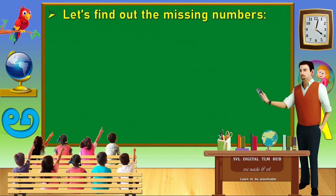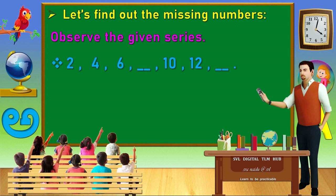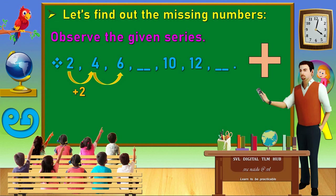Let's find out the missing numbers. Observe the given series. In this series, two numbers are missed. Let's take two consecutive numbers. Suppose two, four. Let's take four and six — two consecutive numbers.